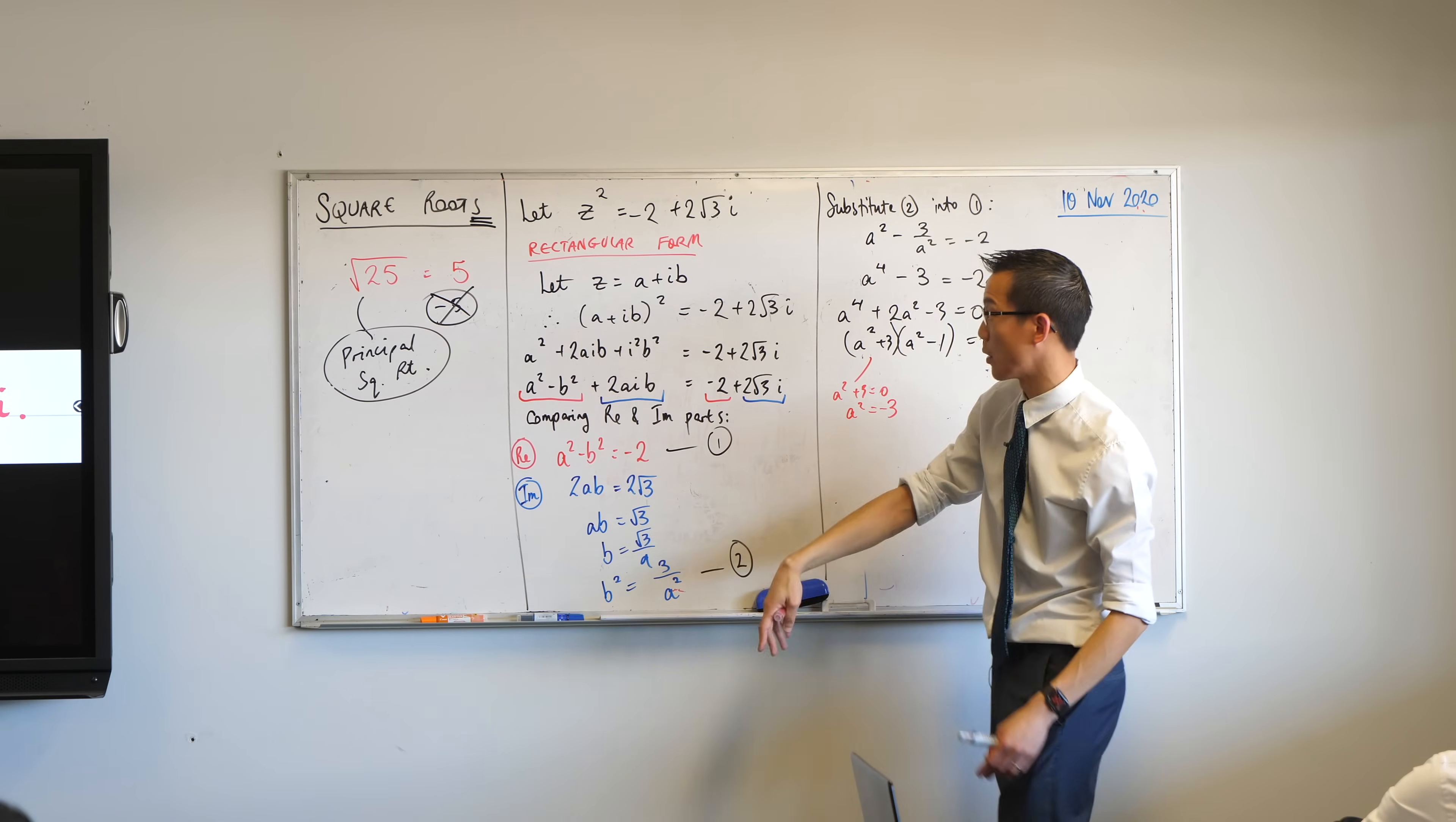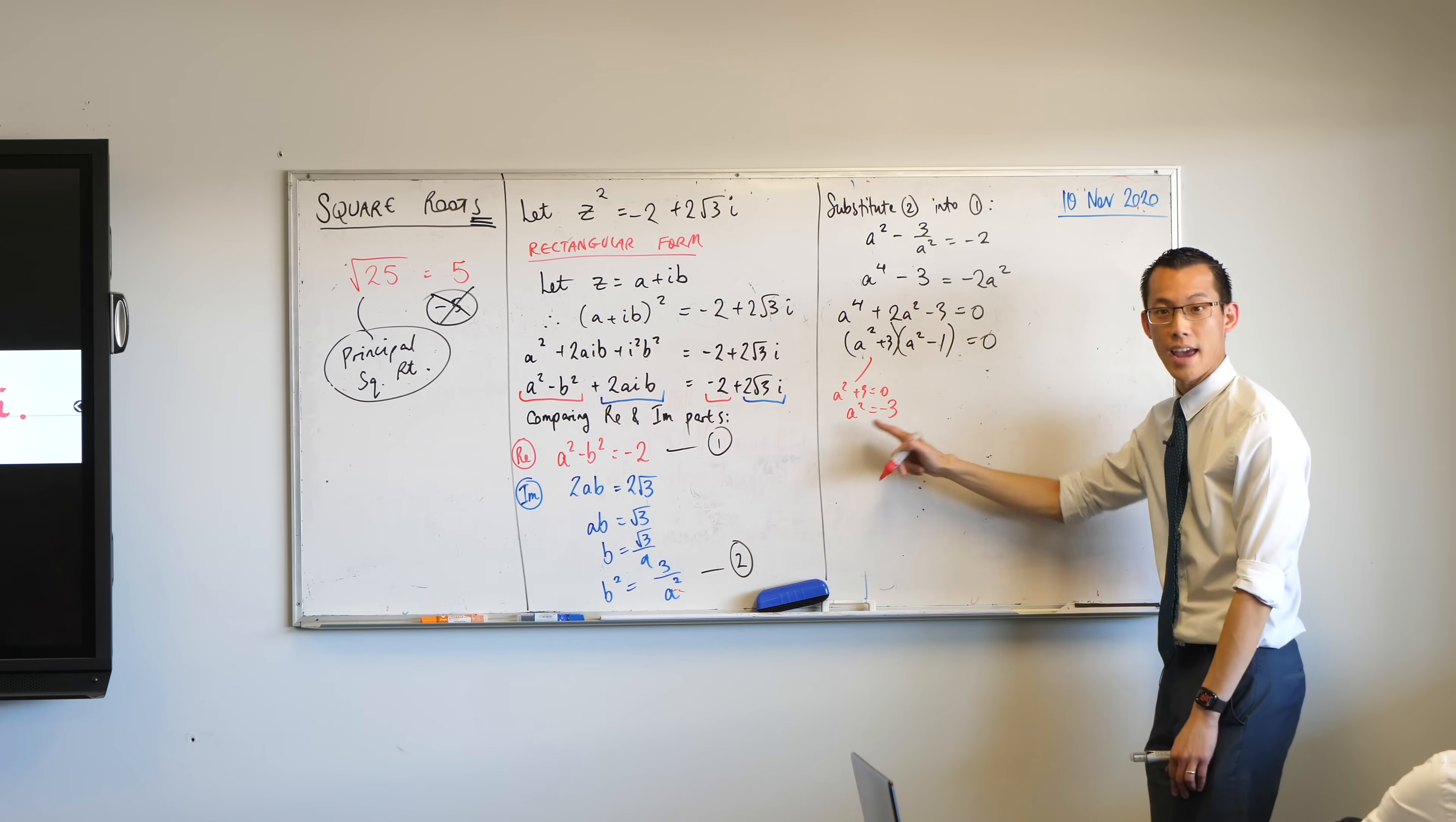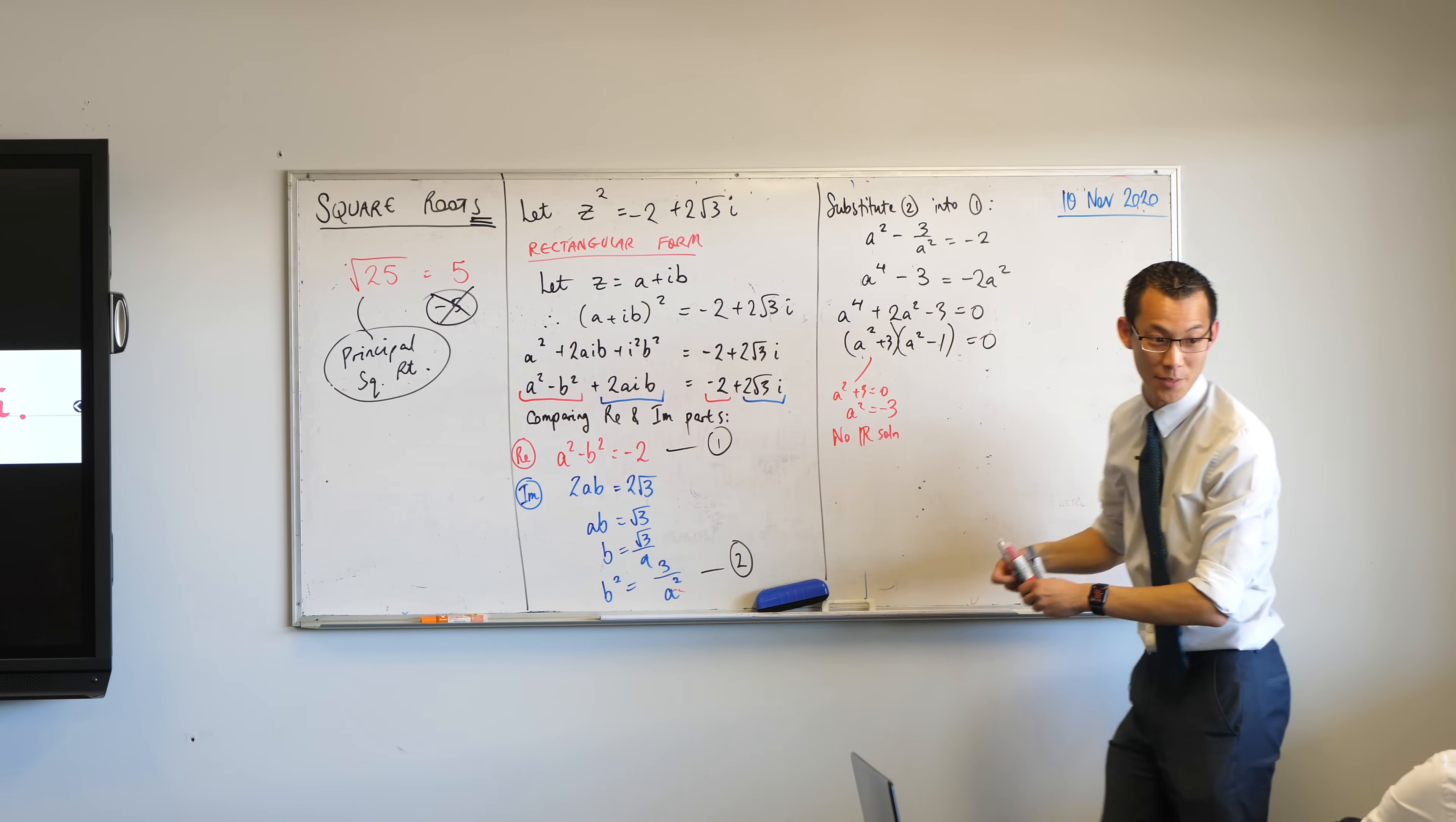In fact, all the way at the beginning of this topic, we said a and b are defined as real numbers. Otherwise, the real part's not real. And the imaginary part's not imaginary. So therefore, I can say, there is actually no real solution from this. No real solution.